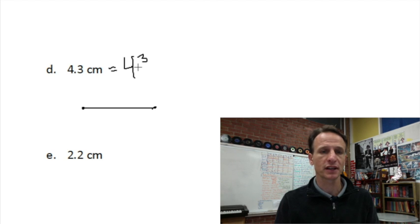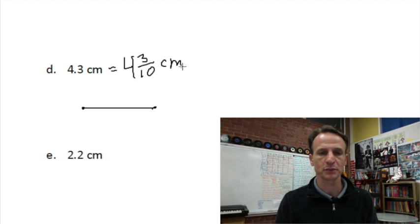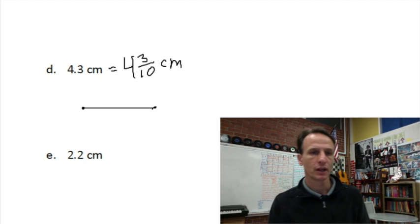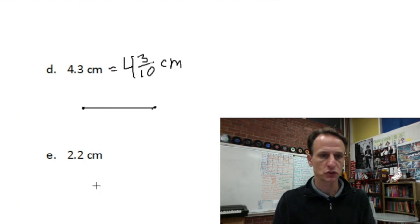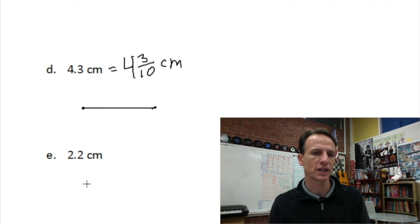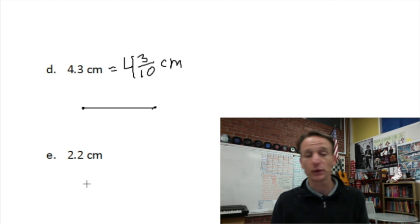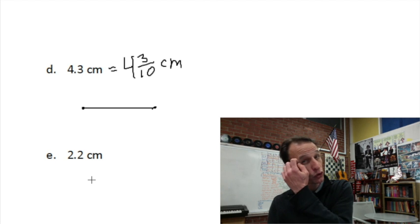Four and three tenths as a mixed number — don't make this harder than it has to be — we just write four and three tenths. Then we jump over and do two and two tenths centimeters.